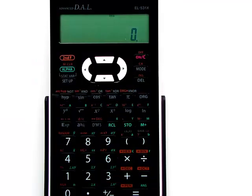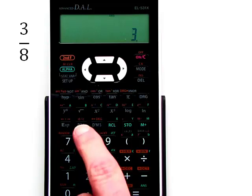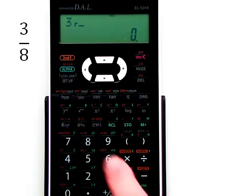We'll look first at a simple fraction, like for instance 3/8. To use the calculator key, first enter the number 3, the numerator, then press the fraction key, then the denominator 8.